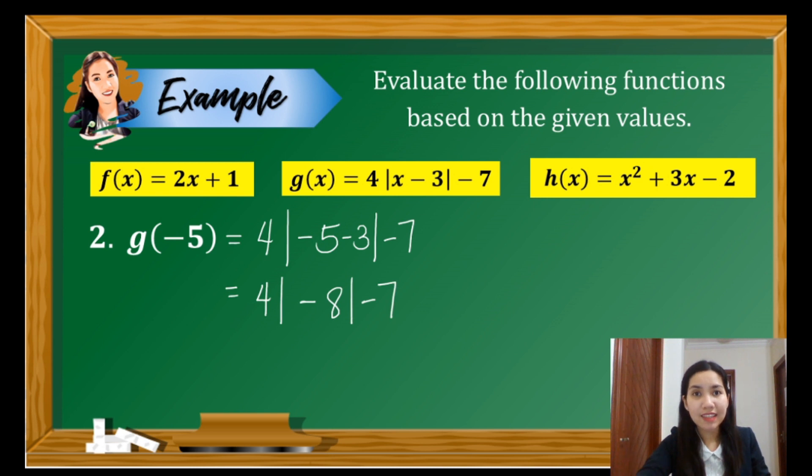Note that in dealing with absolute value, the absolute value of a negative number is positive. This becomes 4 times 8 minus 7. Multiplying 4 and 8, it gives us 32 minus 7, the answer is 25. So the value of the function g when x is negative 5 is 25.